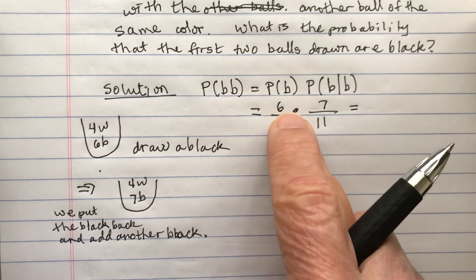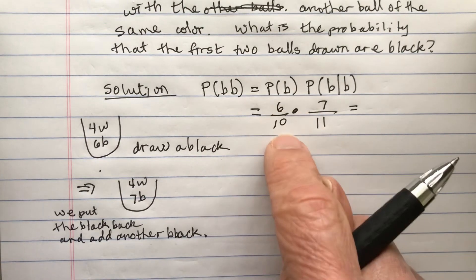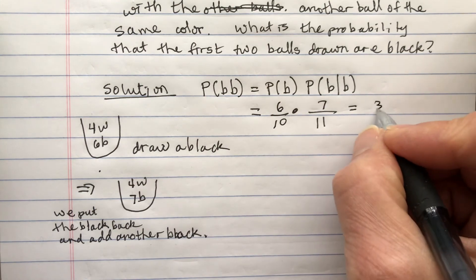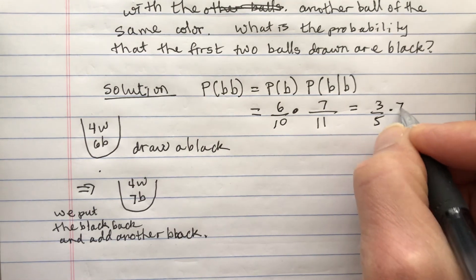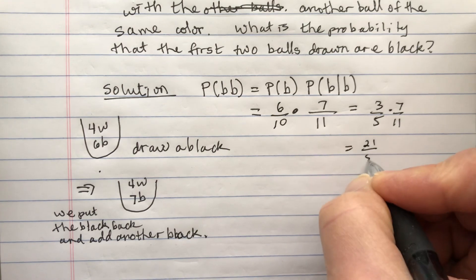So this reduces just a little bit. Six and ten divided by two makes three over five, and that makes twenty-one over fifty-five.